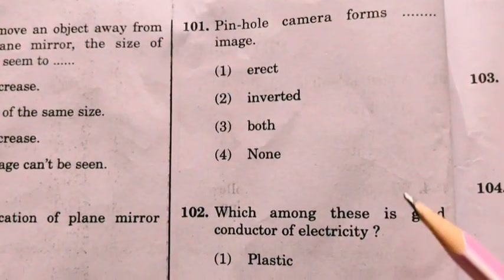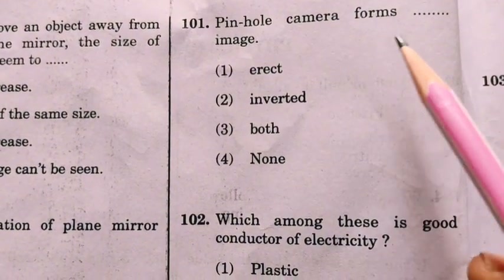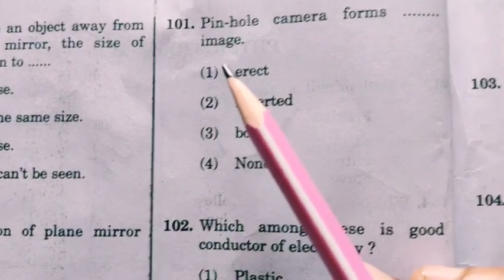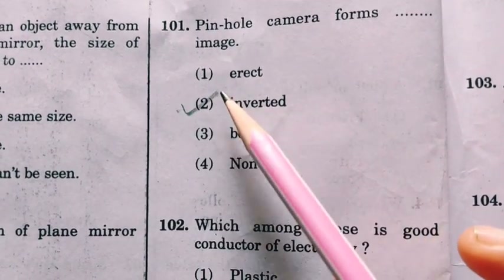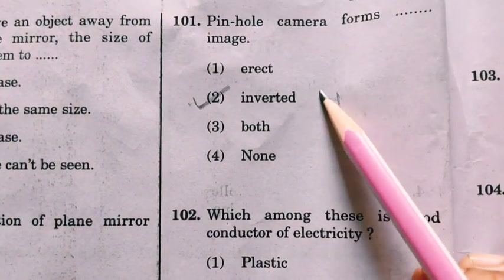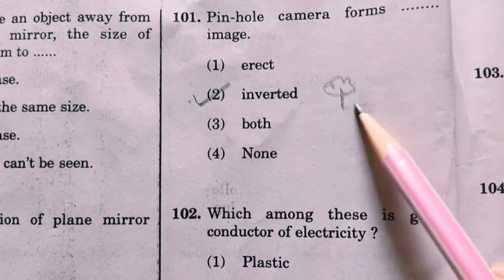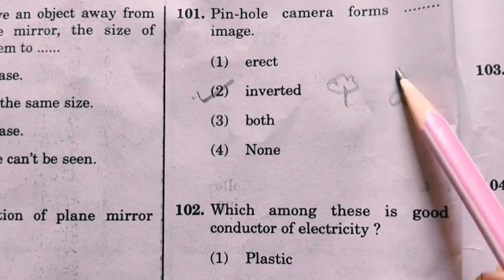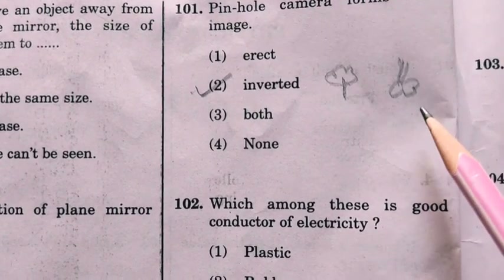Next question: a pinhole camera forms a dash image. In a pinhole camera, the image is seen in an inverted position. For example, if a tree is upright, in the pinhole camera it will appear inverted.